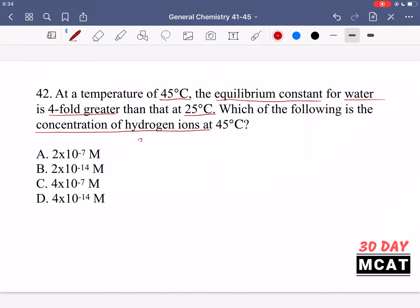So 25 degrees this is standard. You should know this is a number you should already have in your head. Equilibrium constant for water which is equal to concentration of hydrogen ions multiplied by hydroxide. That is equal to 1 times 10 to the negative 14. That's at 25 degrees Celsius.